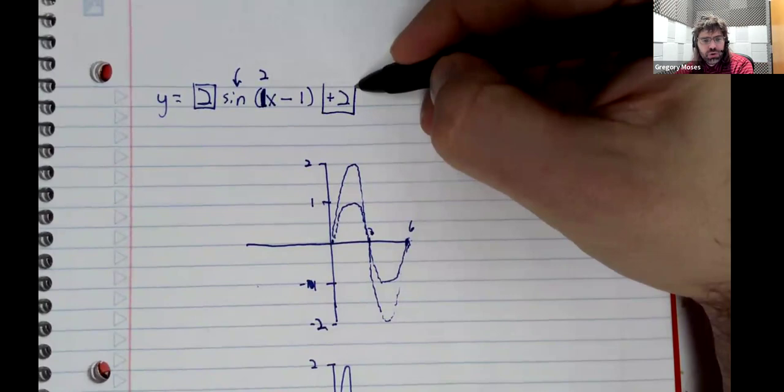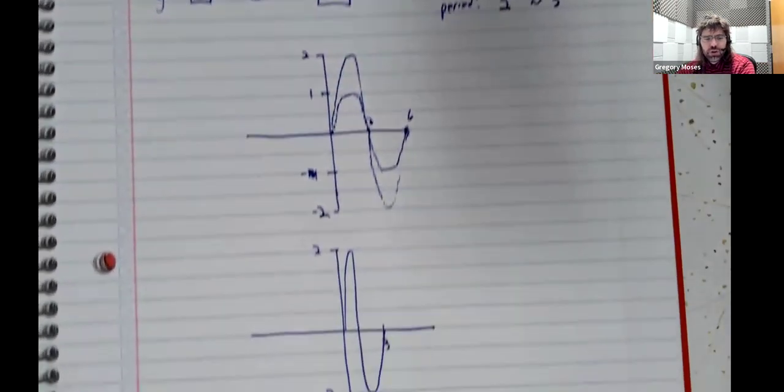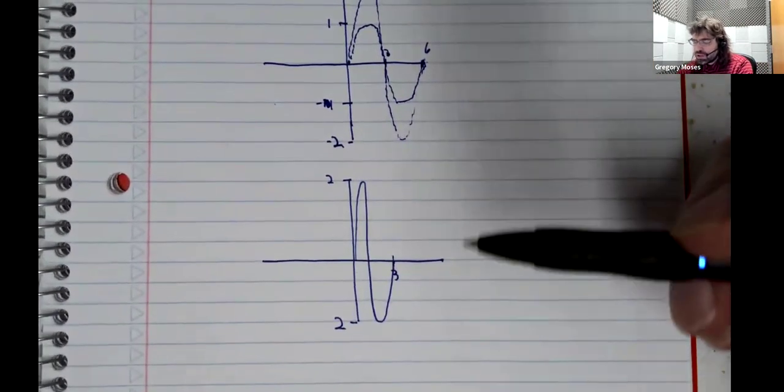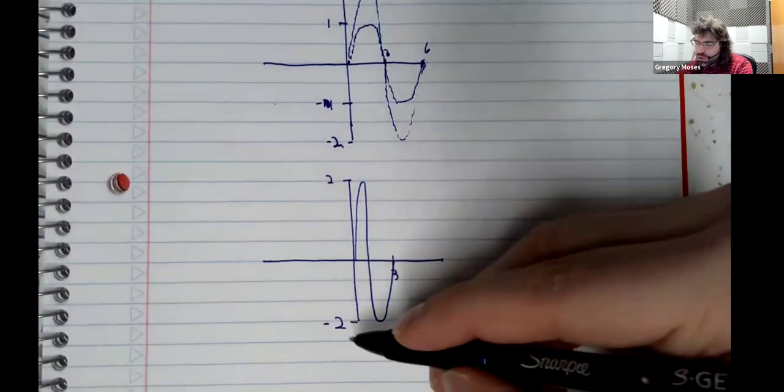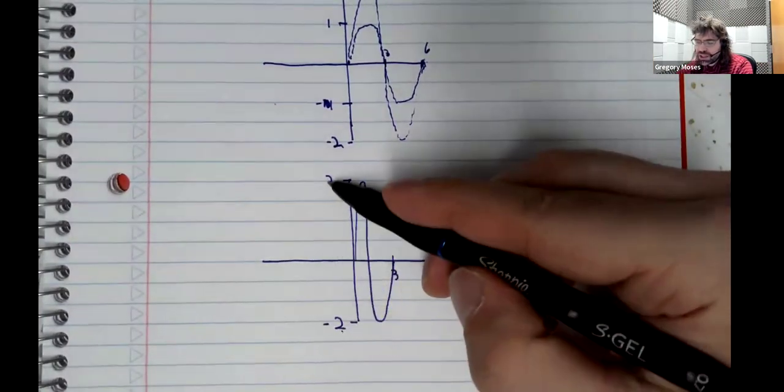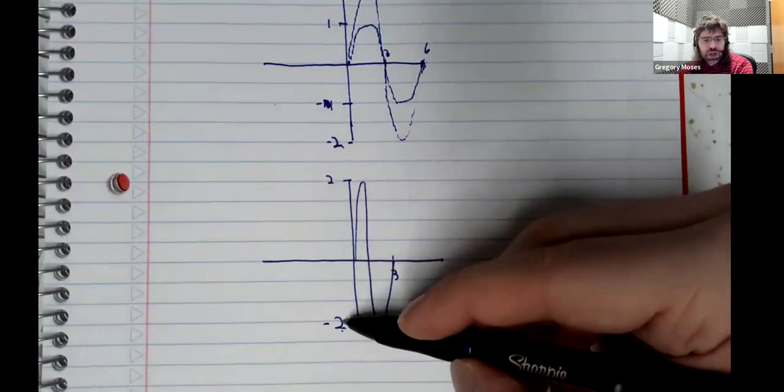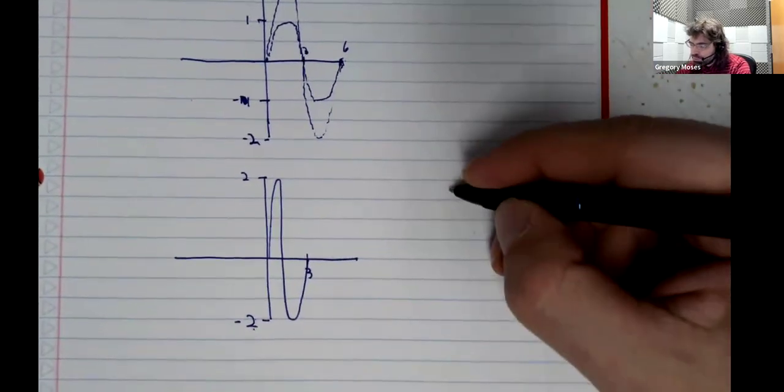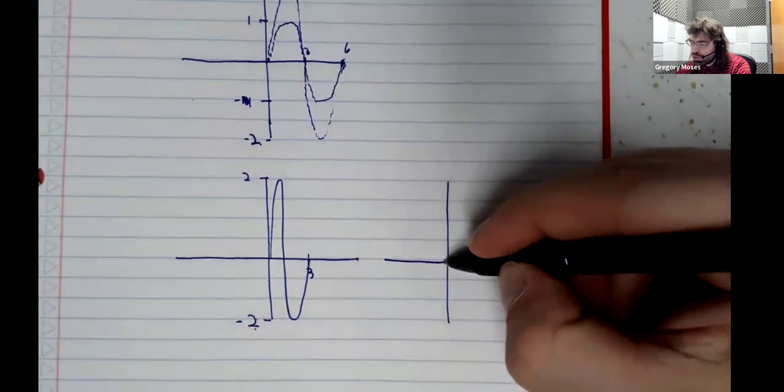We've got a vertical shift and a horizontal shift. The vertical shift is two units up. So now instead of going from negative two to positive two, it should go from zero to four.